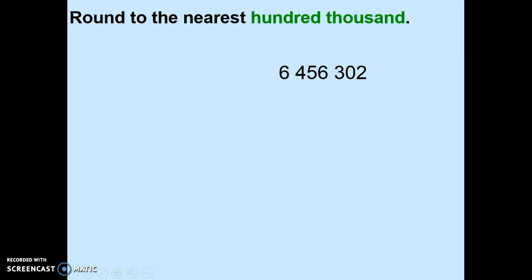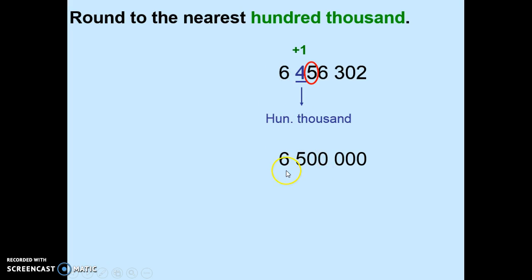And now for one final example. Round to the nearest hundred thousand. Underline the digit in the hundred thousandth place and circle the number immediately to the right. We know that five asks us to add one to the digit in the hundred thousandth place. Replace all numbers to the right with zeros, and the numbers to the left stay the same. Your final answer is 6,500,000.